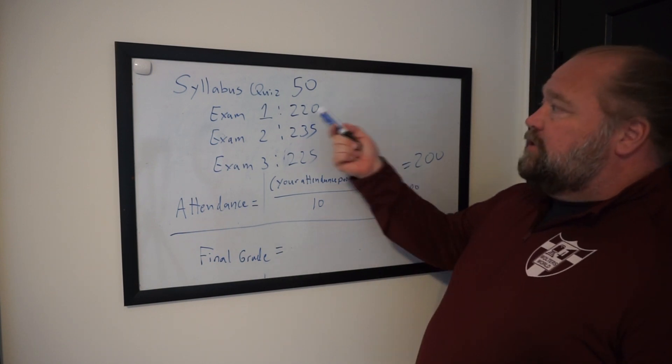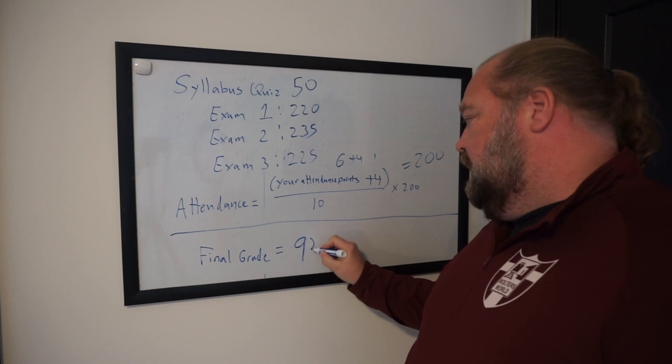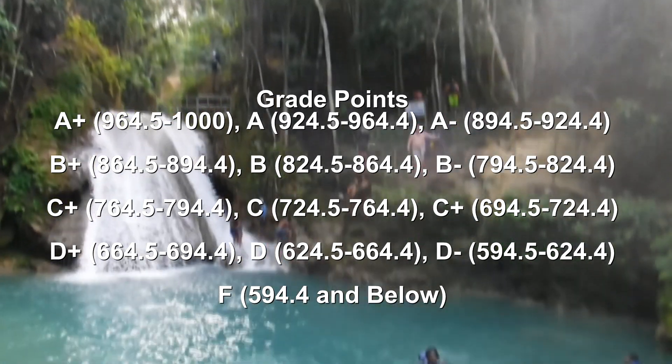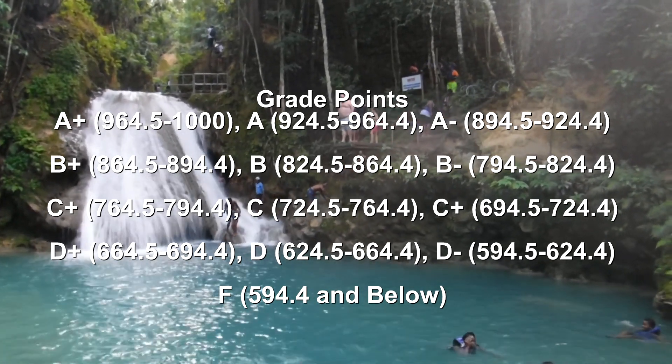So 200 plus 50 plus 220 plus 235 plus 225 equals 930. And if you look at the syllabus, 930 points gives you an A. Congratulations. You did great in the class.